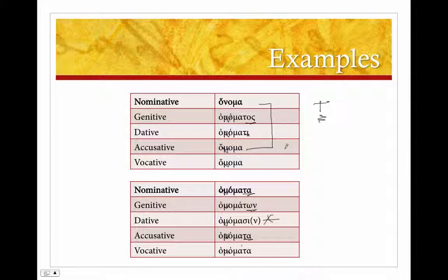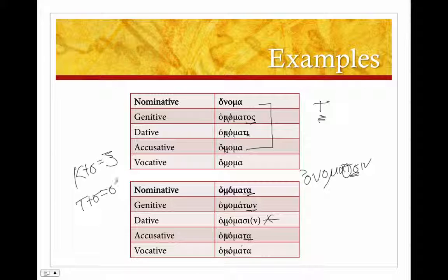Now what happened here with onomasin? We had our stem onomat plus sin. The tau sigma, the sigma has swallowed the tau giving us onomasin, so not onomattsin but onomasin. So keep in mind these two rules: that kappa and sigma are going to give us x, and tau plus sigma are going to give us sigma.